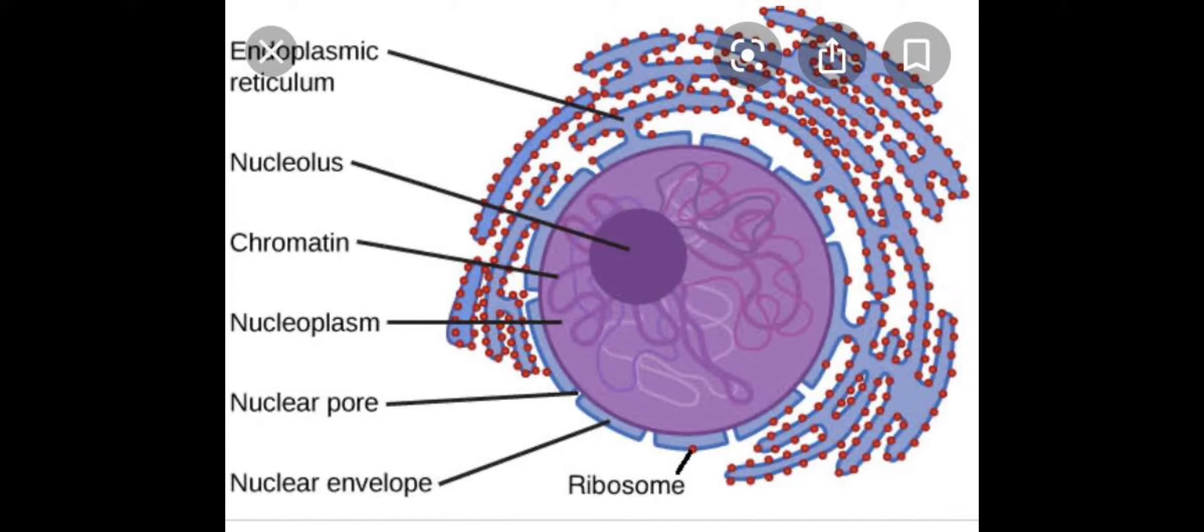Now the chromatin is further divided into two types, that is euchromatin and heterochromatin. The heterochromatin is the condensed form of chromatin and it takes up the darkest stain and does not undergo the process of transcription. Whereas the euchromatin is the dispersed form of chromatin that takes up the lightest stain and is active transcriptionally.